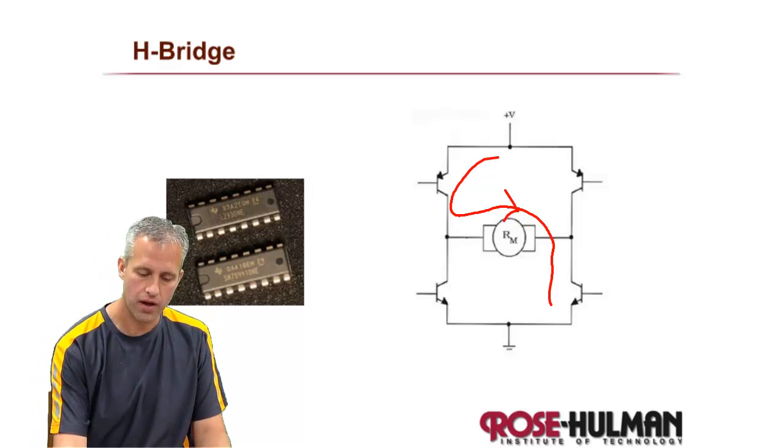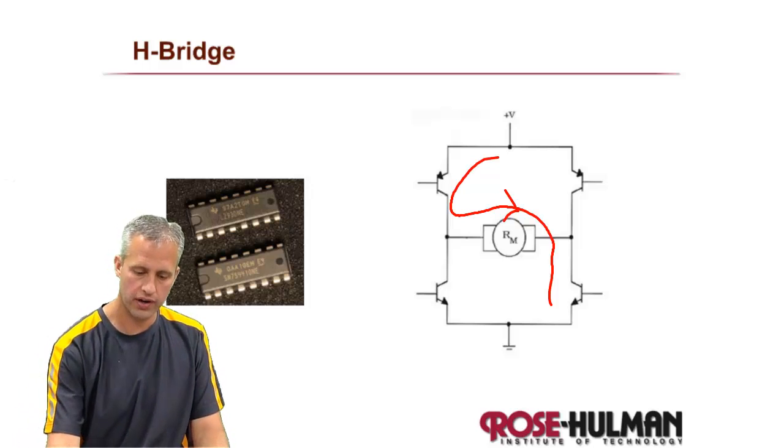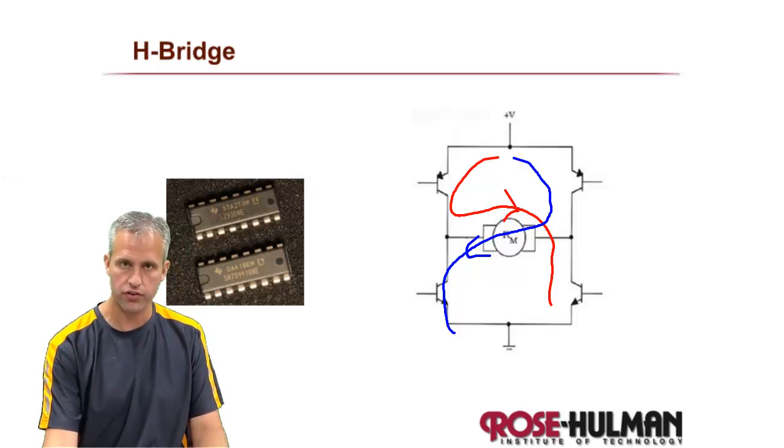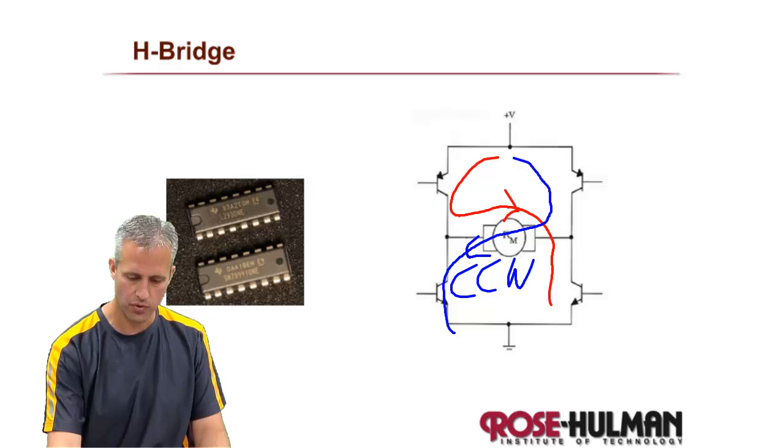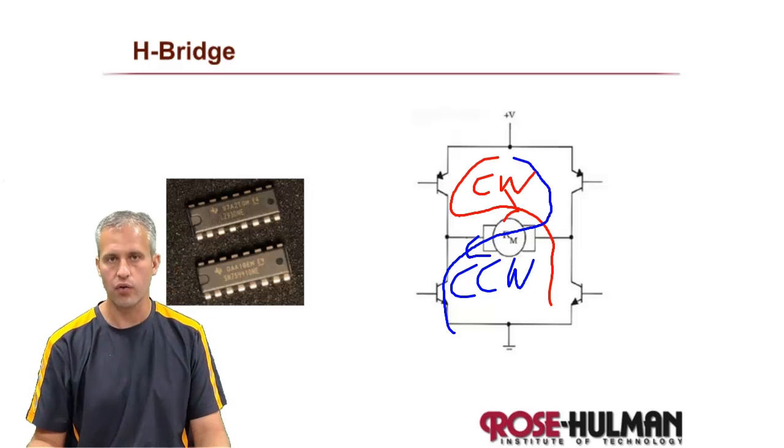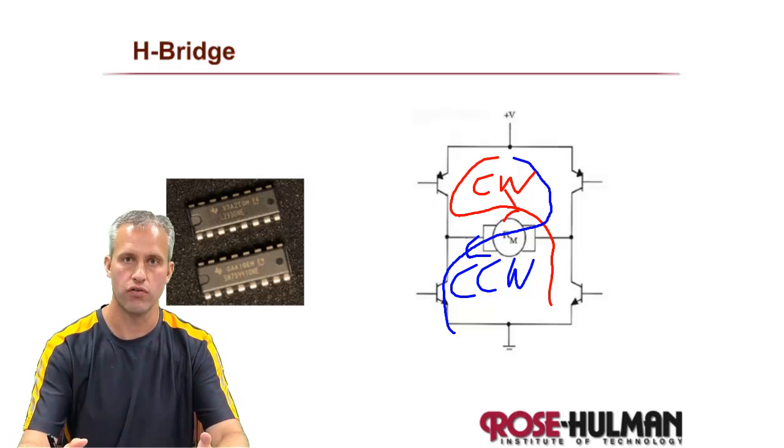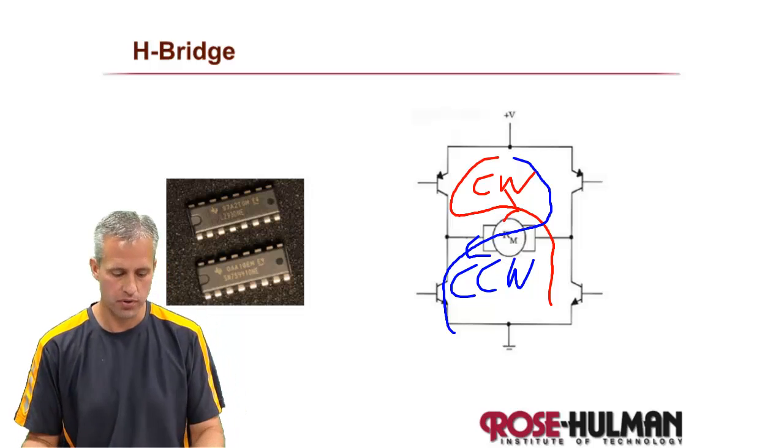If you opened up the upper left and lower right transistors, current would flow through one way. However, if you closed those and opened up the other two, then current would flow in the opposite direction. So in this example, let's say the motor went counterclockwise on the blue line and clockwise on the red line. You could control your wheels to move your car forward or backwards. That's the whole idea of an H-bridge.